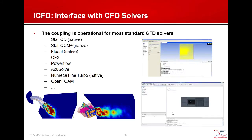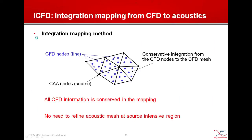We use an interface in Actran called ICFD — Interface between Actran and CFD solvers — to perform several tasks: calculate the equivalent acoustic sources using Lighthill or Möhring analogy, map the CFD result onto the acoustic mesh, and perform a Fourier transform to convert the time-domain CFD results into frequency-domain acoustic sources for analysis. ICFD is interfaced with most standard CFD solvers: natively supporting Star-CCM+ and Fluent, and others such as CFX via the EnSight Gold intermediate format.